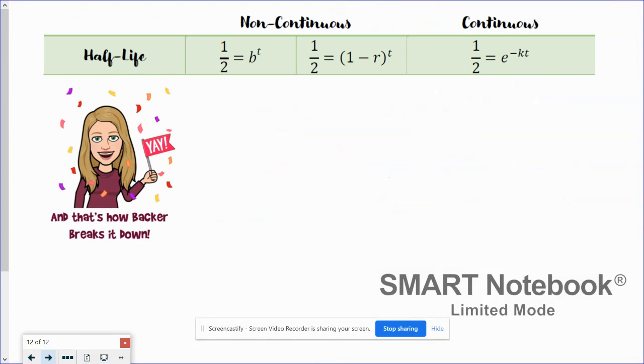But half-life, basically all half-life problems can be set up the same way with one half is equal to the base to the T power. What is the base? That is the question, right? If it's non-continuous, the base is 1 minus R. And if it's continuous, the base is E to the negative K power. And that's how Backer breaks it down.